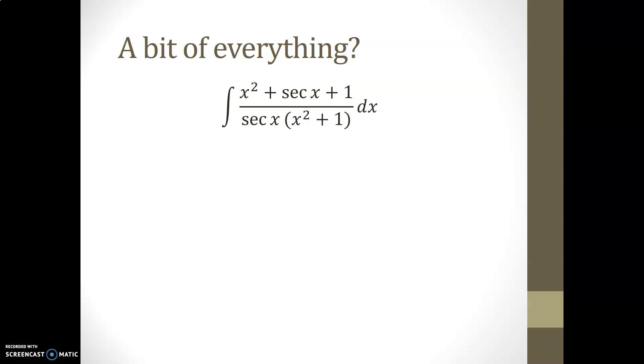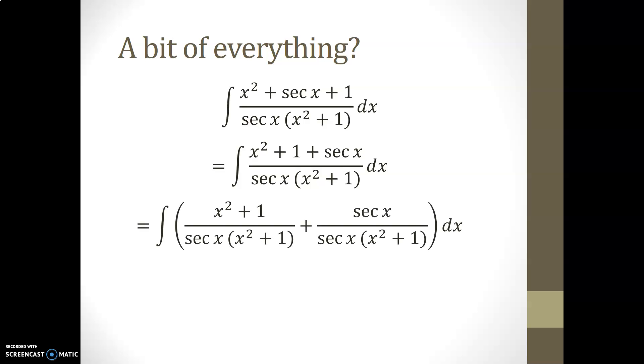Perhaps what we can see is that at the numerator, the x square and the plus 1 that are currently separated, could actually be moved around to be regrouped. And we could choose to split the numerator, not really term by term, but rather by keeping x squared plus 1 as one term, secant x as the other, and dividing those two with the common denominator. The reason being that x squared plus 1 also appears at the denominator, and would lead to a simplification.